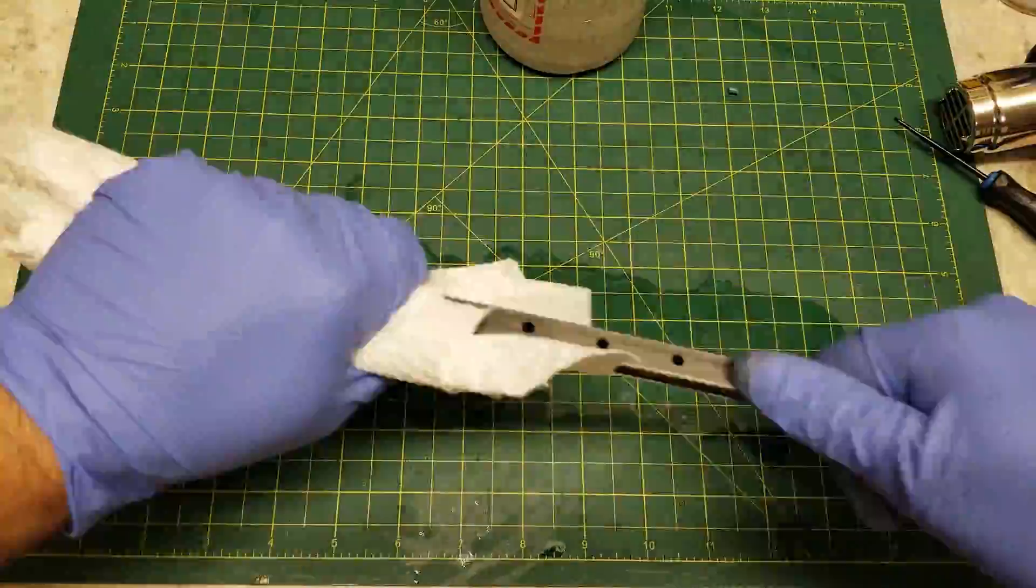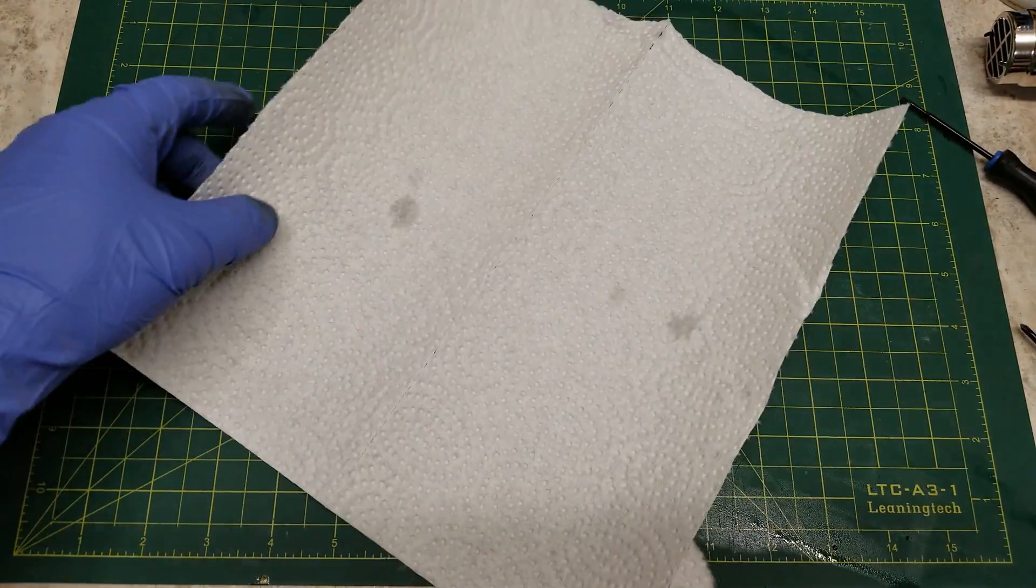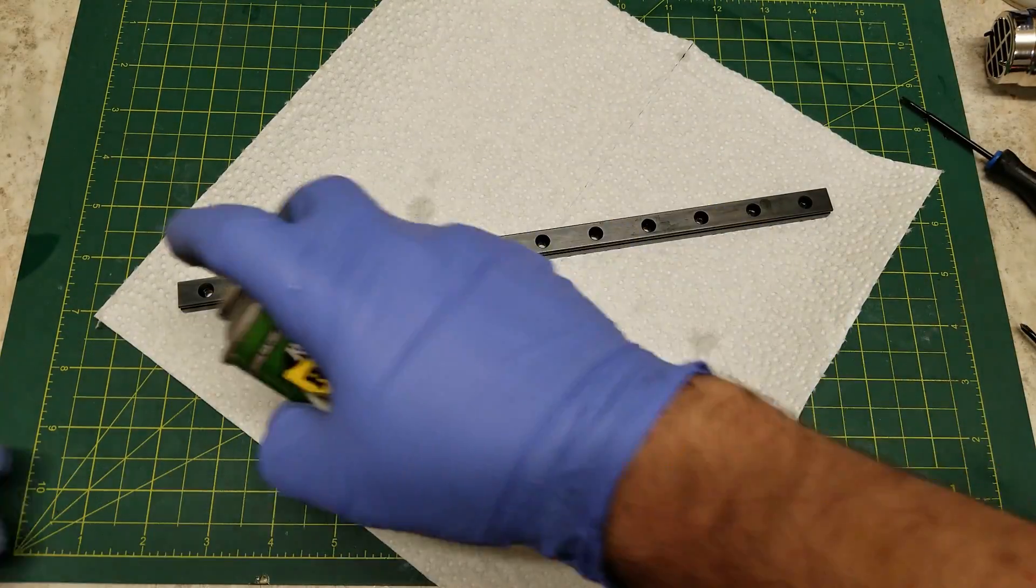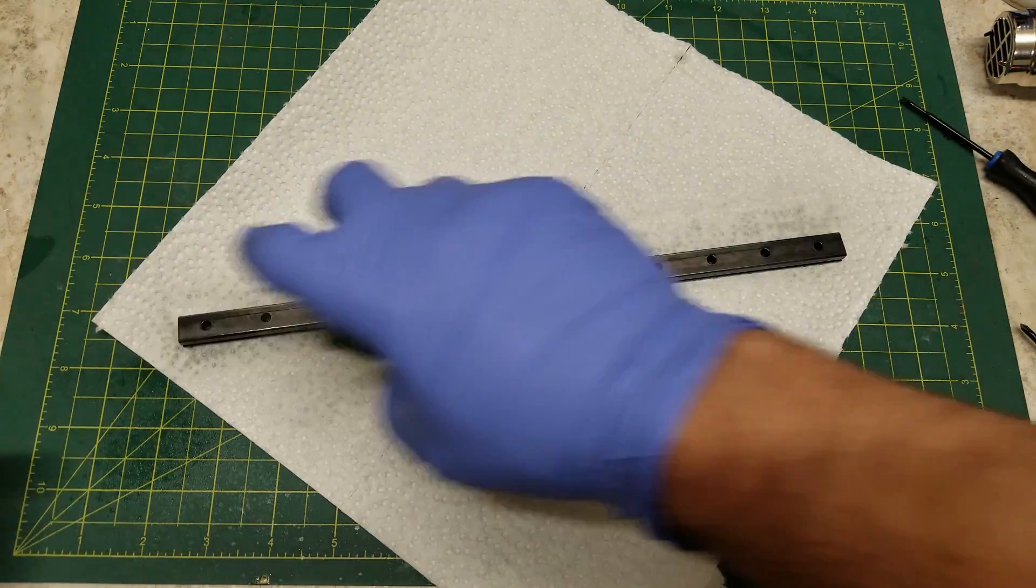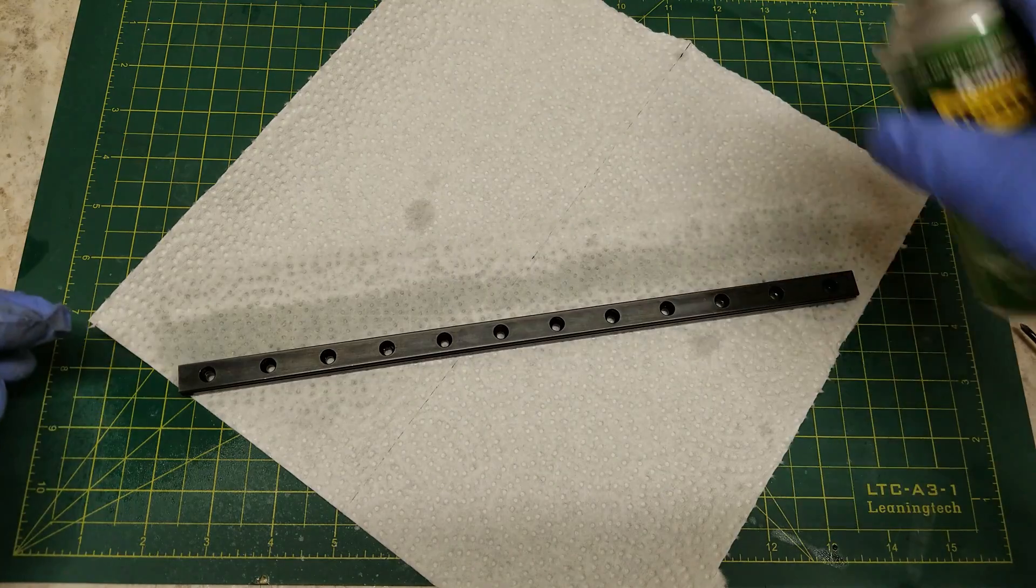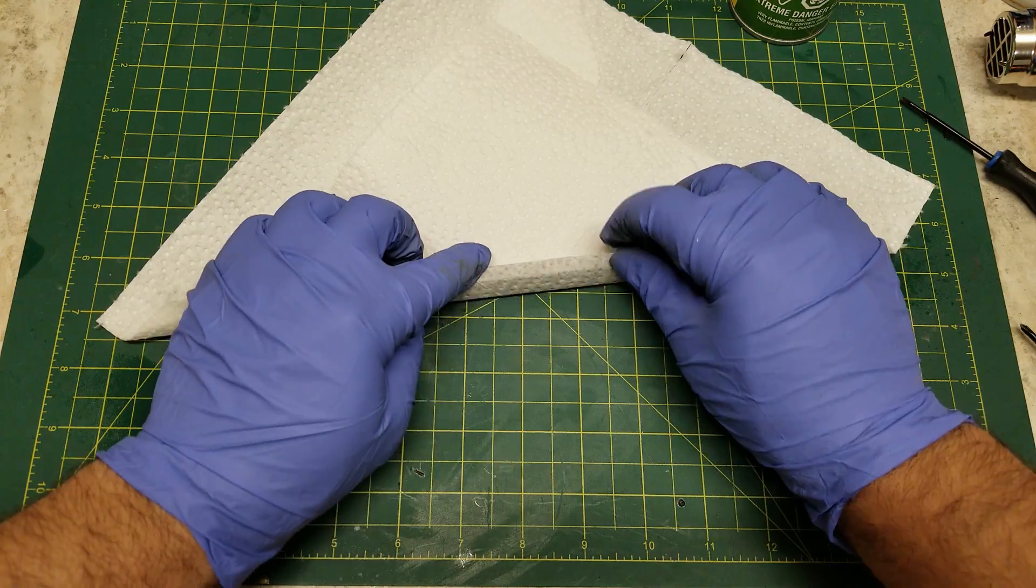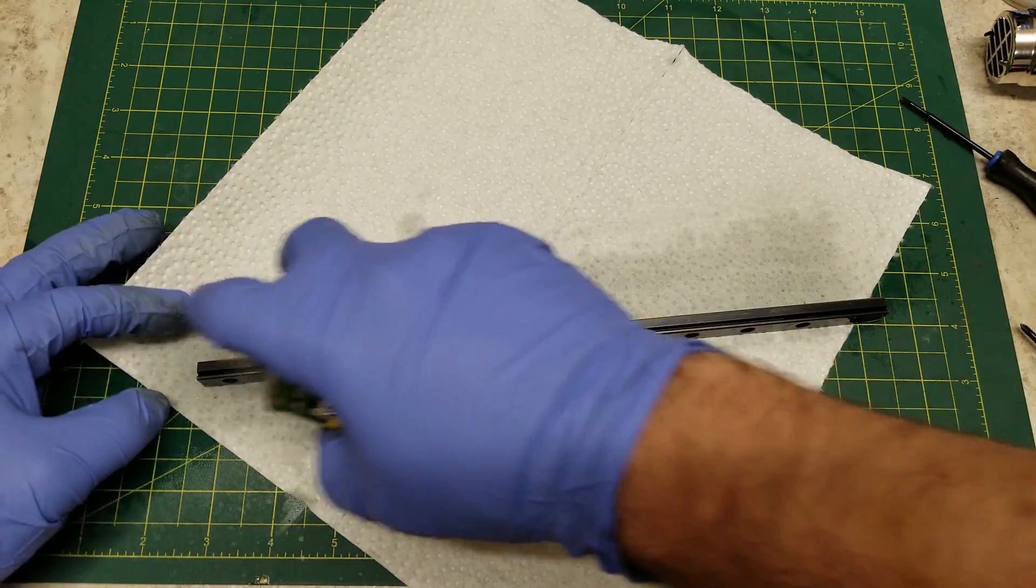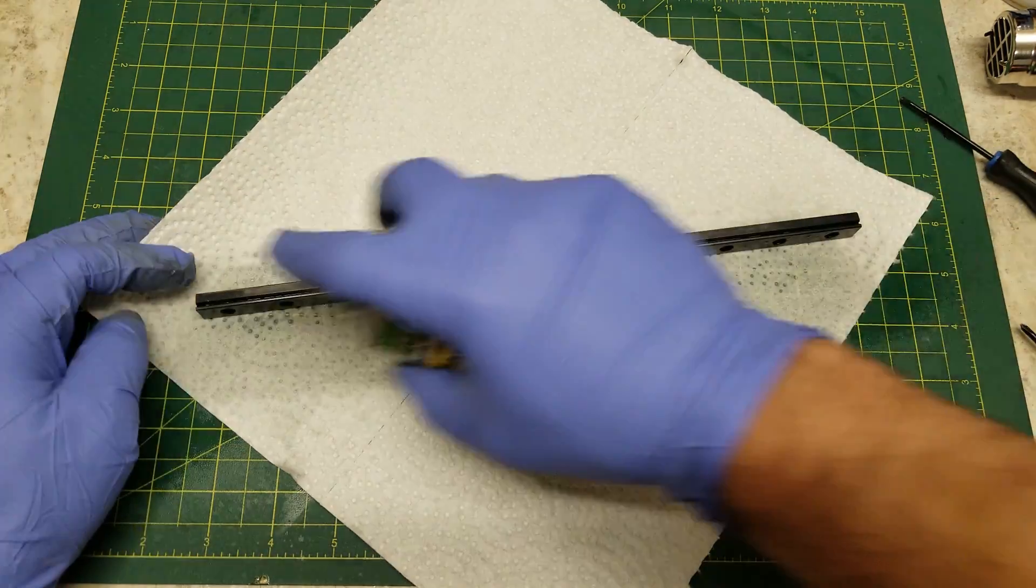Now once you are happy with the final color and result of the bluing you're going to want to lock this in. So after giving a final wipe down and brush you're going to want to clean the rails and then apply some sort of oil. WD-40 works, I'm using some gun oil here, this is REM oil. But any sort of spray-on rust preventative oil will do. You're going to want to liberally coat your rail and then you're going to let this sit for 24 hours while wet. So spray it down, put it aside, and just let it sit for 24 hours.